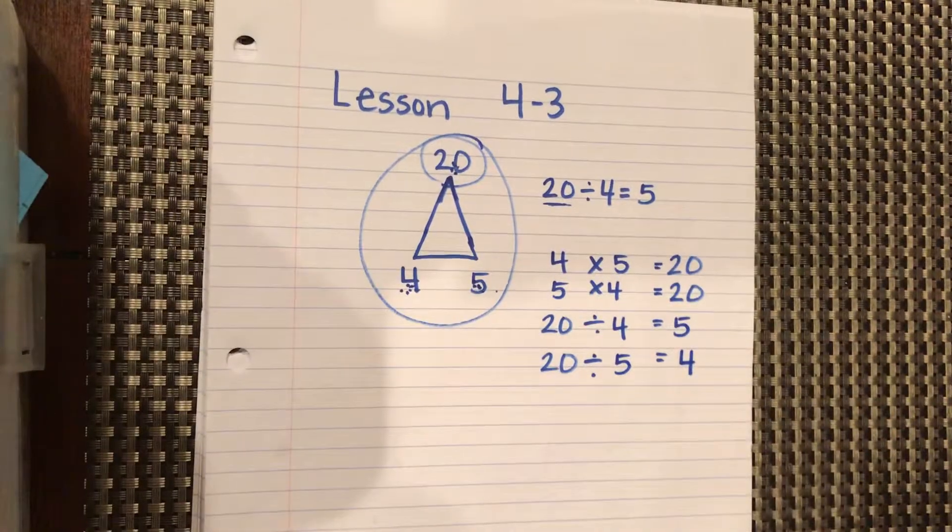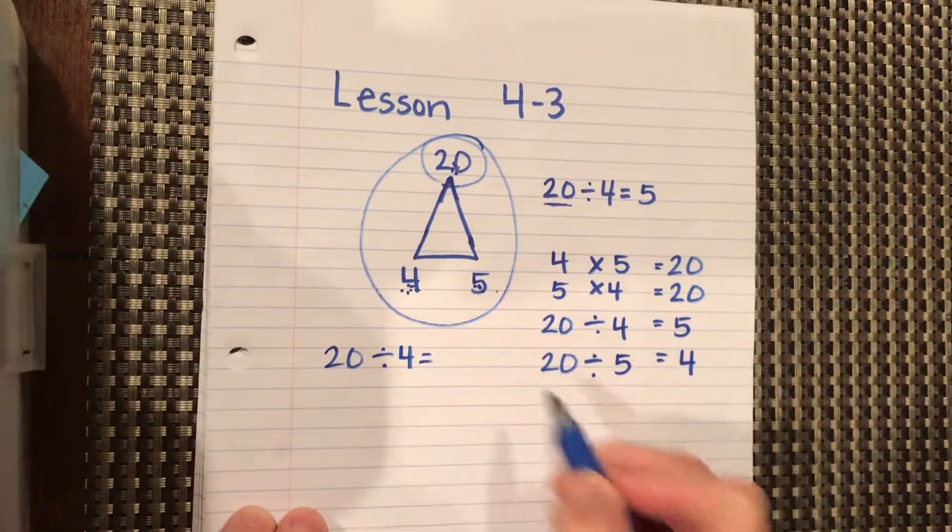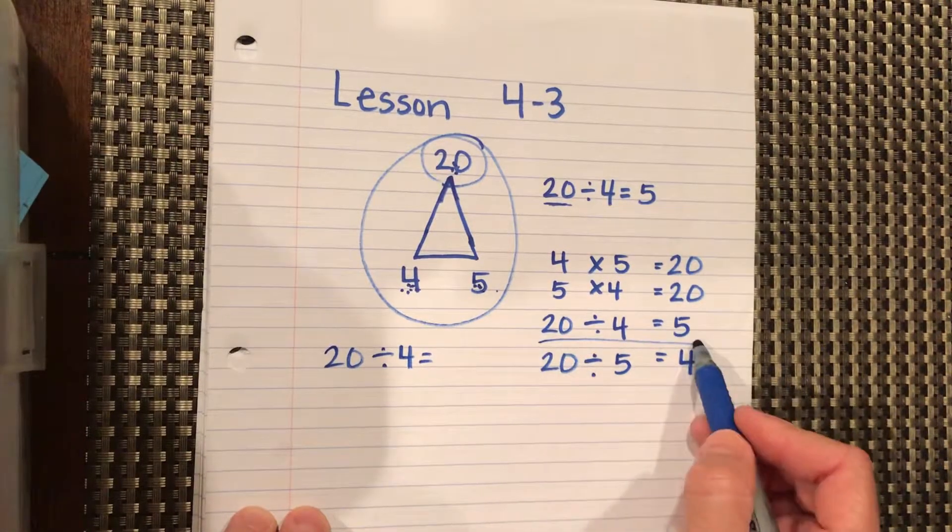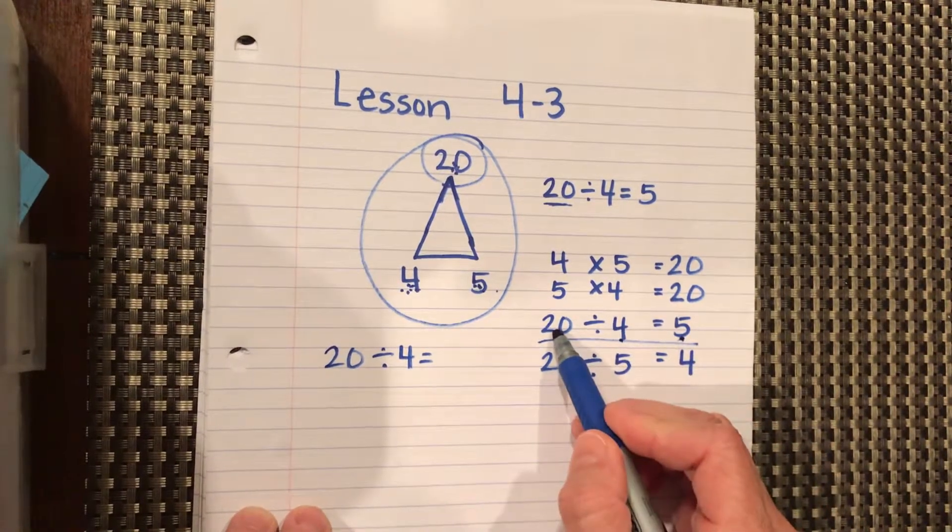So in doing this, this helps us when we get a problem that says, well, 20 divided by 4 equals what? But we know that we can ask ourselves, what number times 4 equals 20?